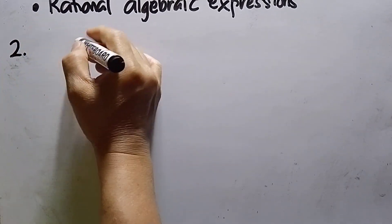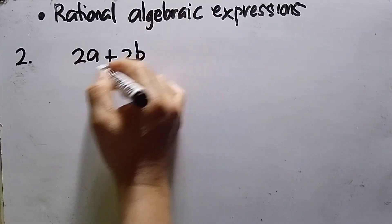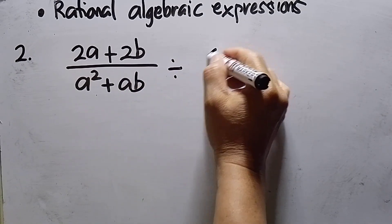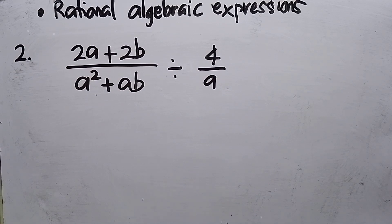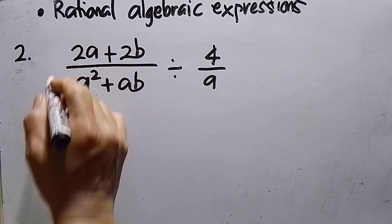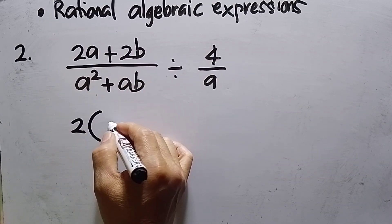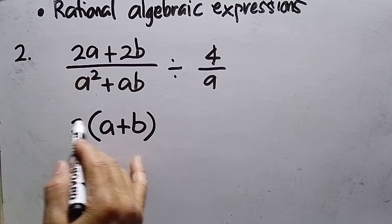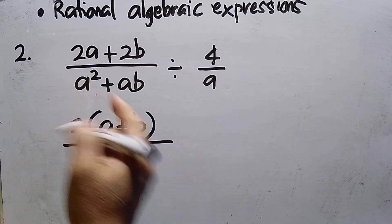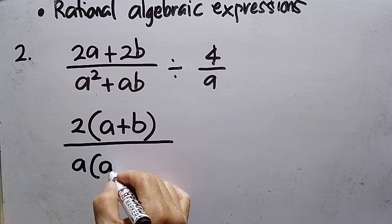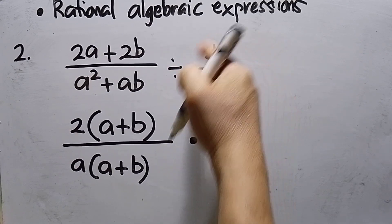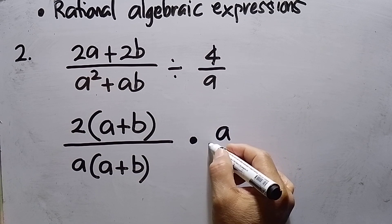Number 2 is (2a + 2b) over (a² + ab) divided by 4 over a. For the numerator, we can factor — the common factor is 2, giving 2(a + b). For the denominator, the common factor is a, giving a(a + b). Since the operation is division, we change to multiplication and take the reciprocal of 4/a, which becomes a/4.